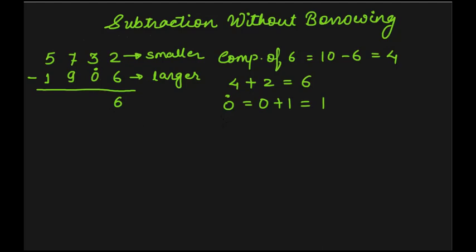Now consider the digits at the tens place. The upper digit is 3 and the lower digit is dotted 0, which equals 1. So 3 minus 1 gives 2.